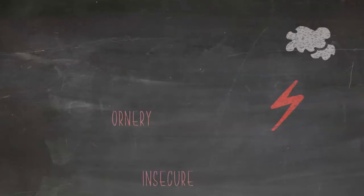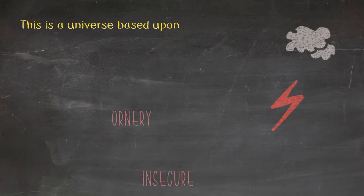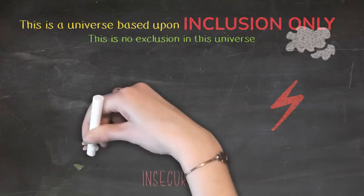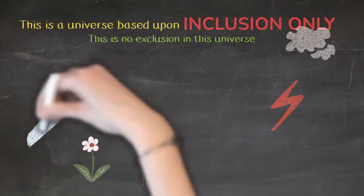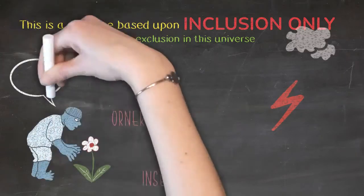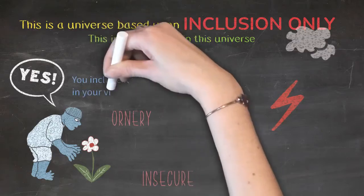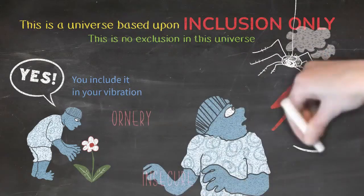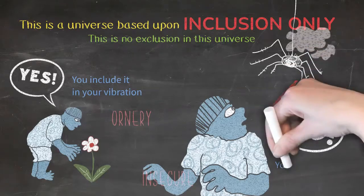Because the source within you understands that this is a universe that's based upon inclusion only. There is no exclusion in this universe. Which means when you see something you want and you say yes to it, you include it in your vibration and you add unto it. But when you see something and you shout no at it, you include it in your vibration and you add unto it.